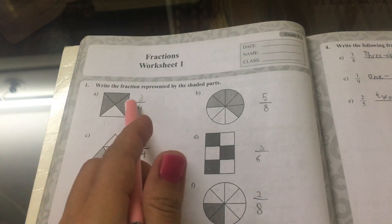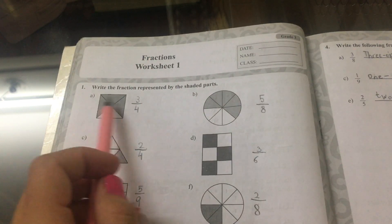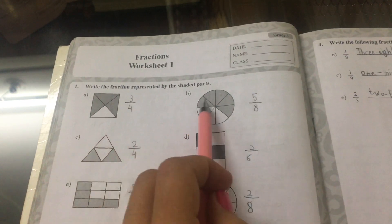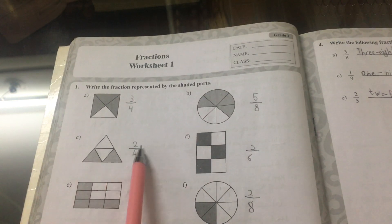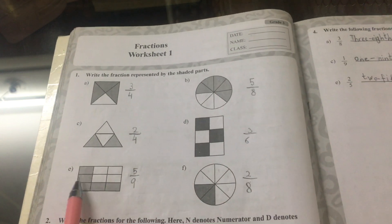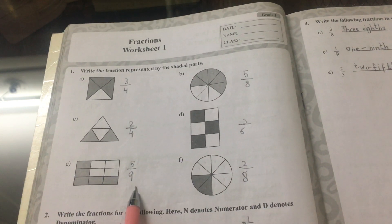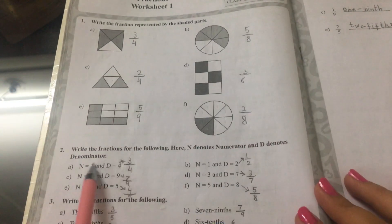Question 1. Write the fraction represented by the shaded parts. A is 3 fourths, B is 5 eighths, C is 2 fourths, D is 3 sixths, E is 5 ninths, and the last one is 2 eighths.